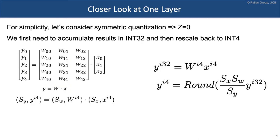Let's look at an example. We have y equal to w times x. For simplicity, consider symmetric quantization, where the zero value equals zero, and 4-bit quantization. With 4-bit quantization, we represent the weights with a 4-bit integer, and we have a common scale for all of the weights — essentially a factored-out common scale, which could be a floating point or rational number.